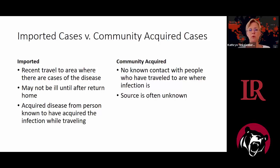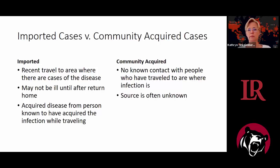With community acquired cases, the people who are sick have no known contact with people who have traveled to an area where the infection is, and sometimes the source cannot be found. With COVID-19, the first indication of community spread was in Washington State, where they had a cluster of cases in a nursing home. The residents had not traveled, their families had not traveled, and employees who tested positive had not traveled either. That's when they knew there was community spread.